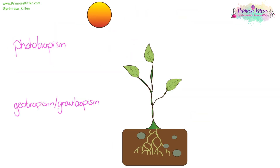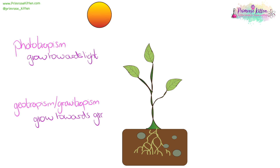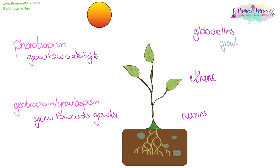Phototropism means something is going to grow towards the light. Geotropism or gravitropism means something is going to grow towards gravity — so your roots are always going to go downwards and your shoots are always going to go upwards. Gibberellins are important for growth. Ethene is important for ripening plants. And auxins are important for growth and are going to direct growth in the right direction.